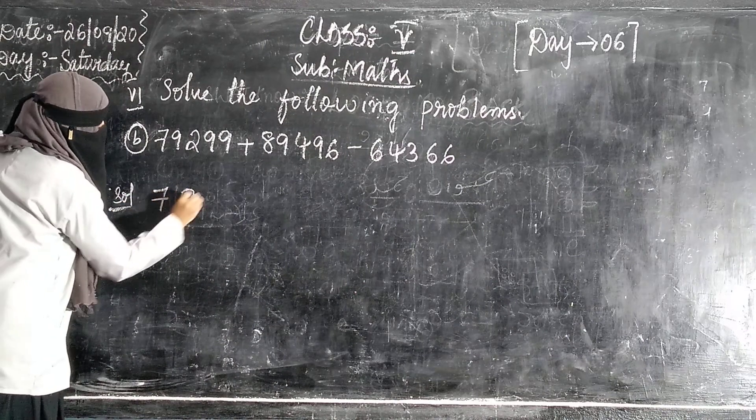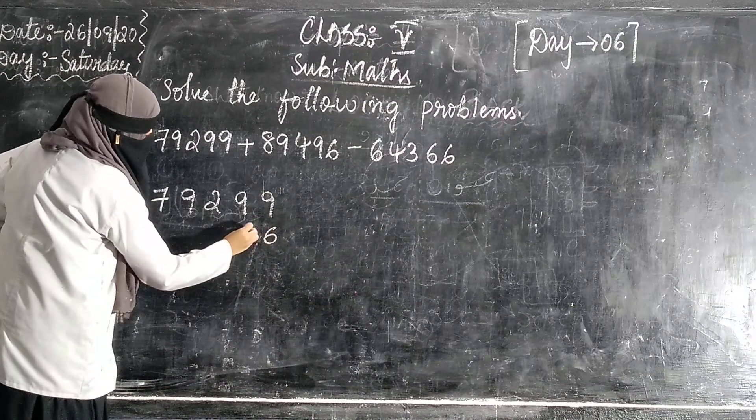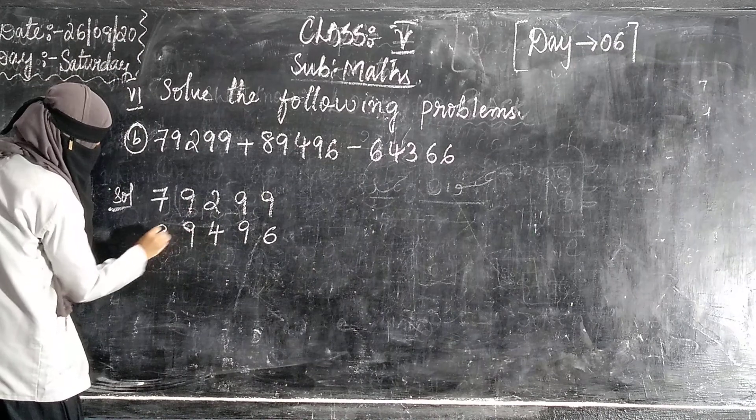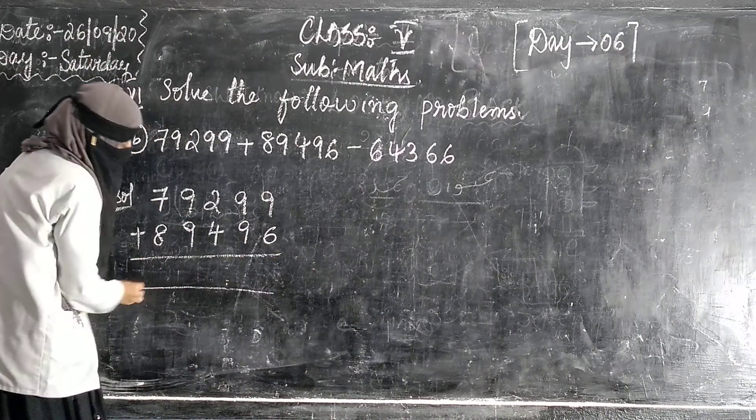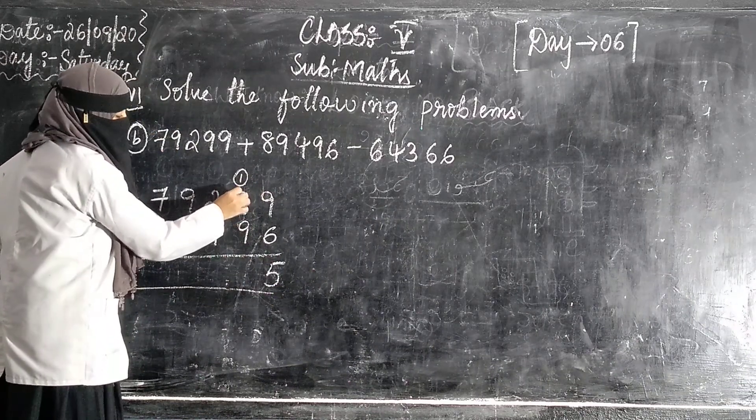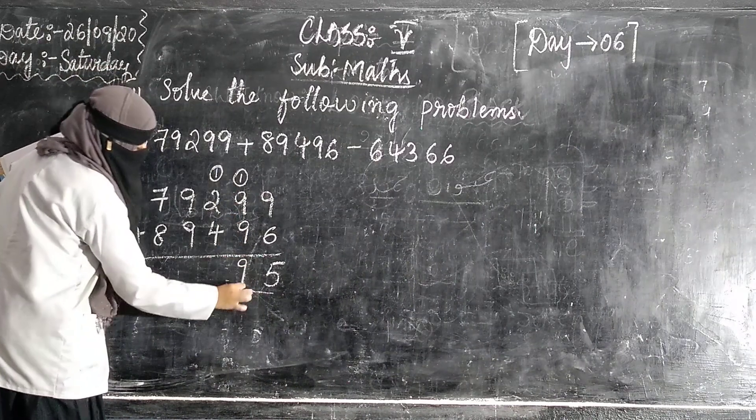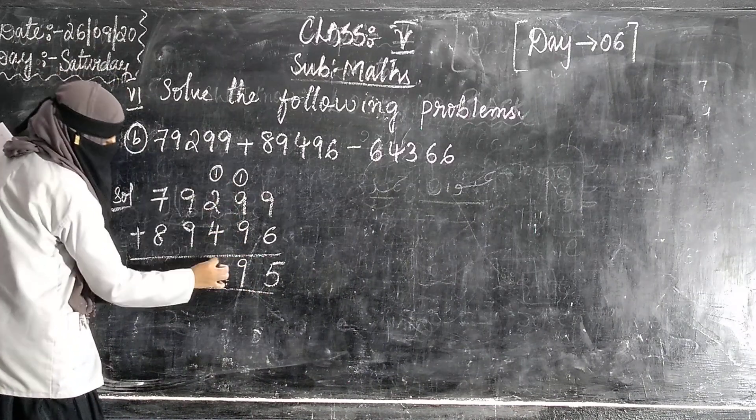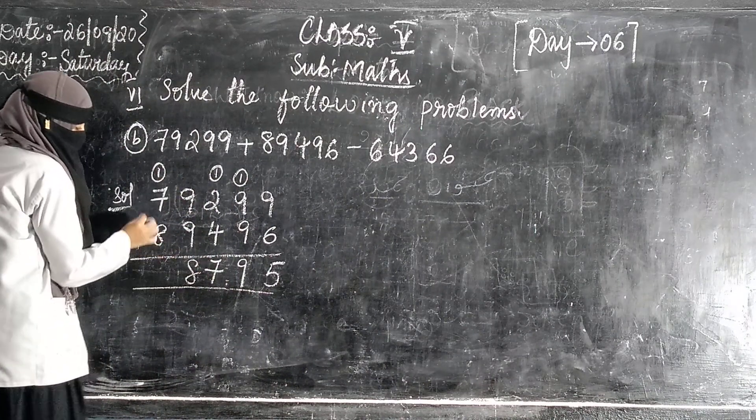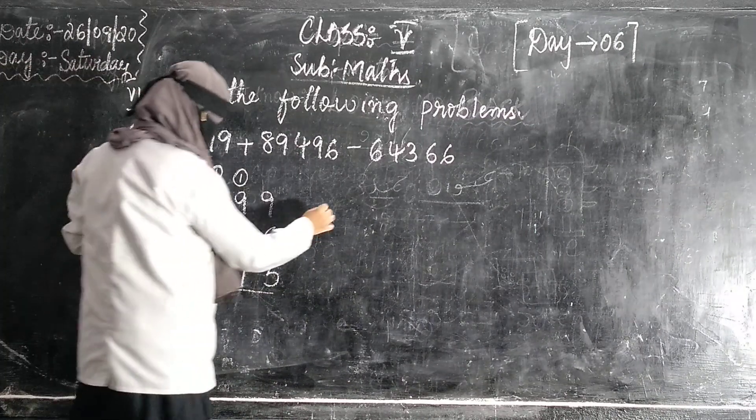So 79,299 plus 89,496. We will add these two numbers. 9 plus 6, 15. 9 plus 9, 18. 2 plus 4, 6 plus 1, 7. Again 9 plus 9, 18. 7 plus 8 plus 1, 16.